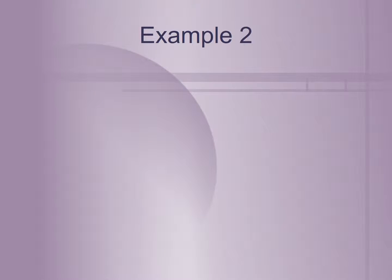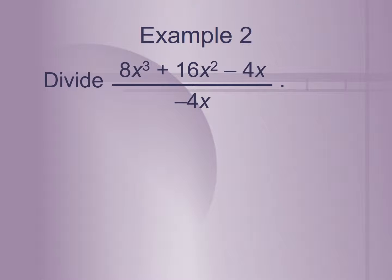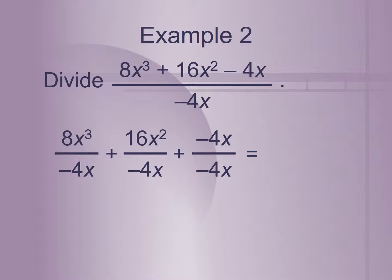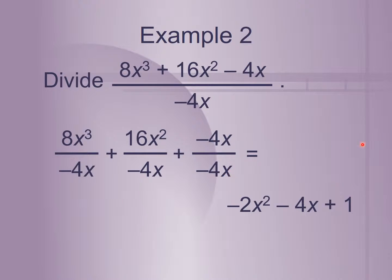Another example: 8x cubed plus 16x squared minus 4x over negative 4x. We're dividing a polynomial by a monomial, so we take each term over the monomial. 8 over negative 4 is negative 2, and x cubed over x becomes x squared, giving negative 2x squared. Then 16 over negative 4 is negative 4, and x squared over x is just x. Finally, negative 4 over negative 4 is positive 1, and x over x is 1, so we get plus 1.